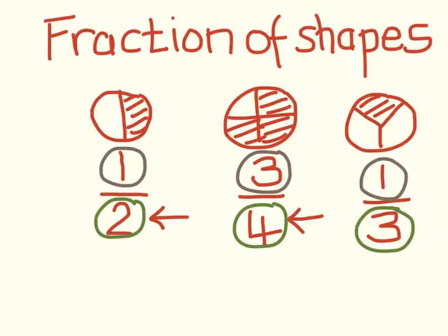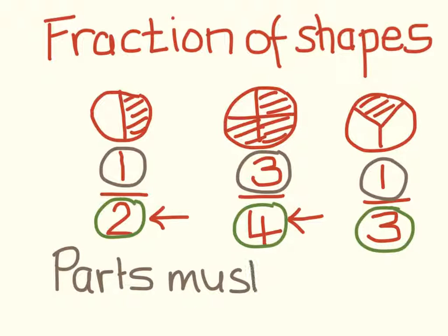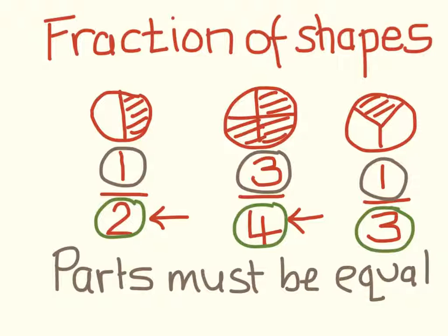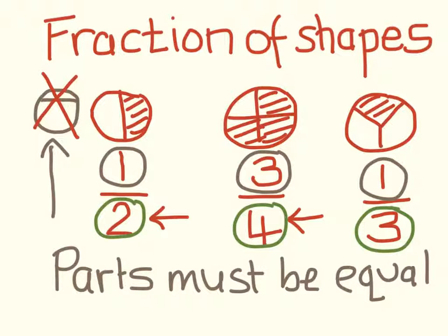Don't forget that the parts must be equal. If they aren't equal, then they can't be a correct fraction. For example, if I split this one into half that way, it is clearly obvious that this is not equally divided. So therefore, that can't be half that shape.